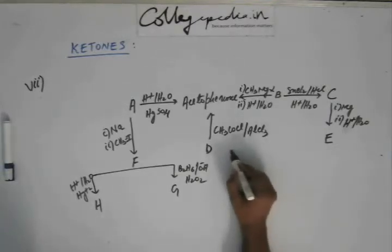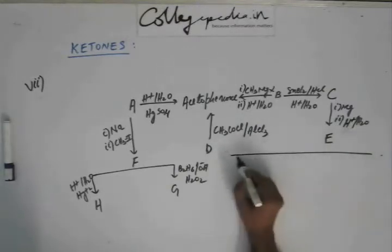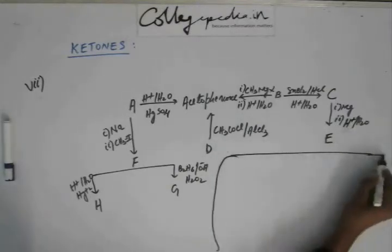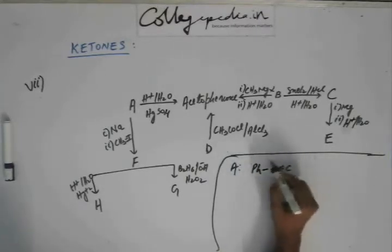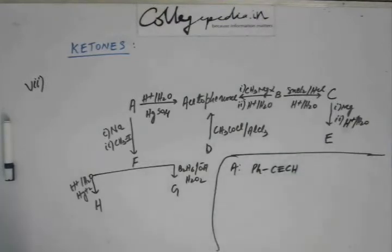So A would be, A should be this - a benzyl ring and a triple bond outside that ring. That will result in acetophenone. Now B...